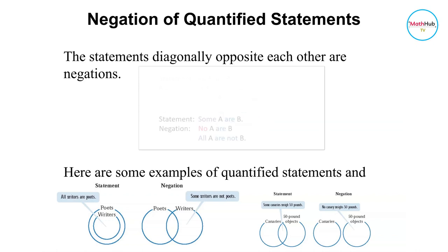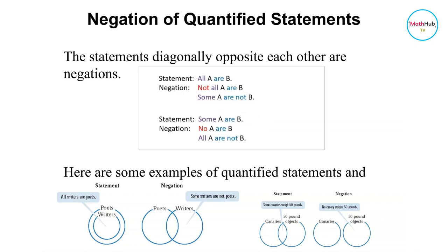Take note of this key relationship: the negation of 'all' is 'some,' and the negation of 'some' is 'no.'